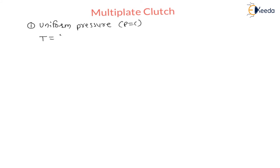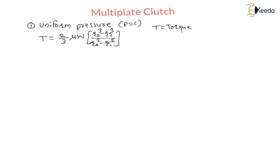As per uniform pressure theory — that is, pressure constant — torque transmitted is equal to two-thirds times mu times W times (Ro³ minus Ri³). This formula we have derived, where T is torque transmitted, mu is coefficient of friction, W is load, Ro is outside radius, and Ri is inside radius. This is the torque transmitted by a single plate clutch.